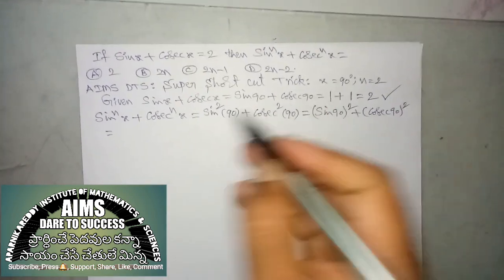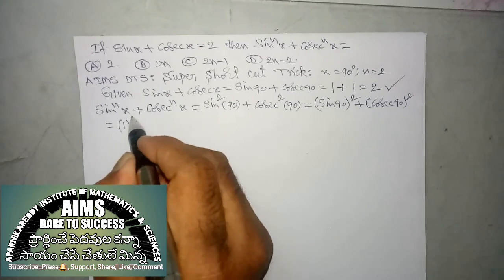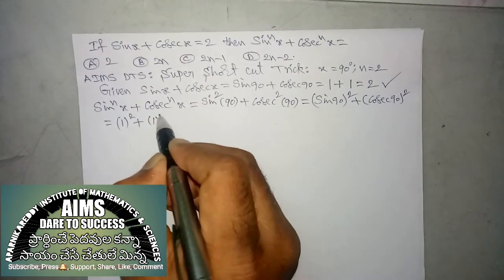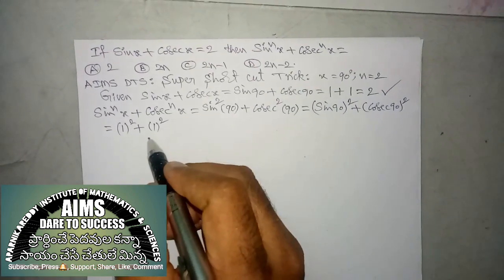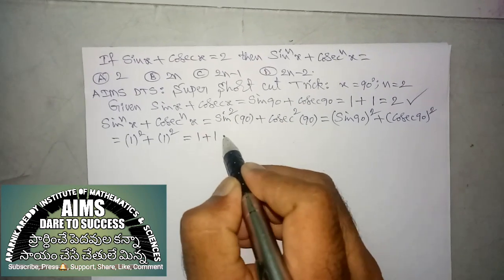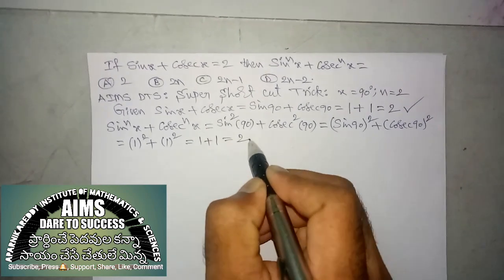sin 90 whole square plus cosecant 90 whole square. Sin 90 before, we have taken 1 only. So, 1 whole square plus cosecant 90 also 1 whole power 2. Means, you can write same. 1 square is 1 plus 1 square is 1. 1 plus 1 is 2.